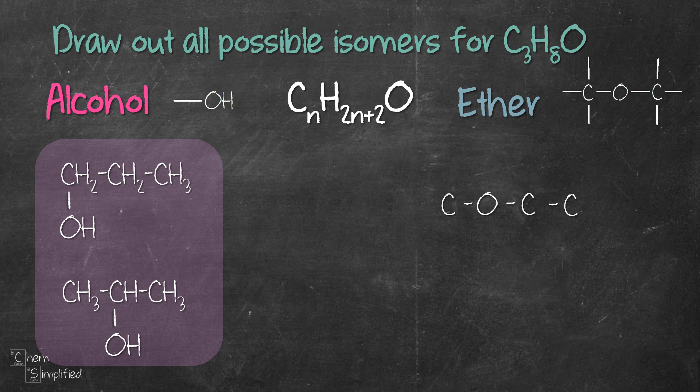If we were to draw out two carbons before oxygen like this, are these two the same? Looks like yes. So it turns out we only have one ether structure for C3H8O. So we add in the hydrogens and here's what we got.